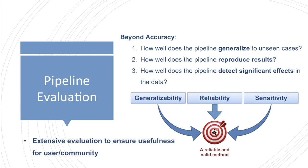To ensure that FastSurfer is not only accurate but also sensitive and reliable, and to ensure its usefulness to the neuroimaging community, we extensively validated our pipeline with respect to three main aspects: first, how well does the pipeline generalize to unseen cases — for example different datasets, age ranges, disease states, and vendors — which relates to generalizability. Second, how well does it reproduce results between scans with minimal anatomical variations, relating to reliability. And third, how well does it detect significant effects in the data, such as changes associated with disease states or aging, which relates to sensitivity.